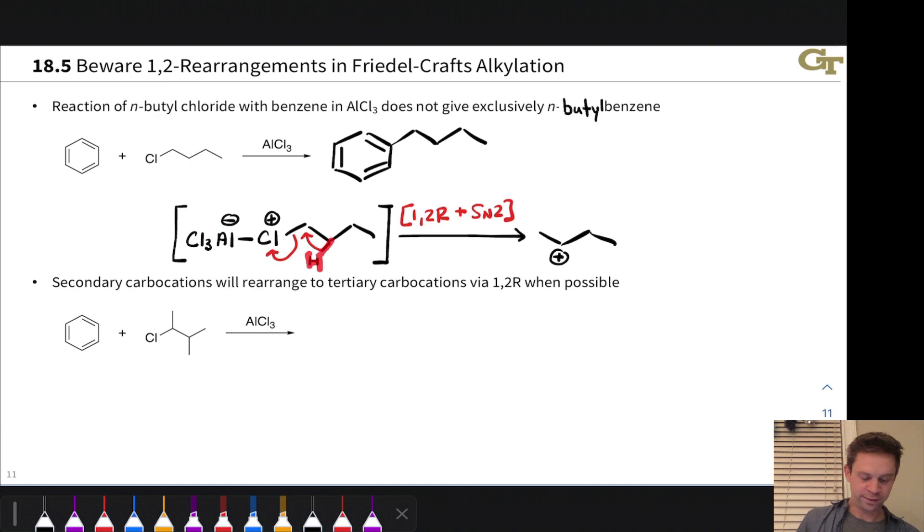To give a secondary carbocation, and we might call this 1,2R plus SN2. It's a 1,2 rearrangement with these electrons migrating over one atom, but also with the loss of a leaving group. This produces a secondary carbocation, which is much more stable than a primary carbocation and a viable reactive intermediate to consider. But reaction of this with benzene is going to produce a secondary alkyl product with a new bond at this carbon. Sec-butyl benzene, with benzene linked at the secondary position of butane. And so what we're seeing here is a rearrangement, essentially, of the active electrophile. There's no discrete primary carbocation, but that Lewis acid-coordinated alkyl halide can still rearrange to give a carbocation that is secondary and therefore not prohibitively unstable.